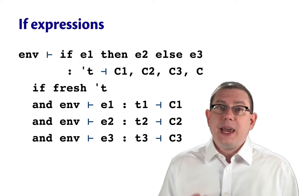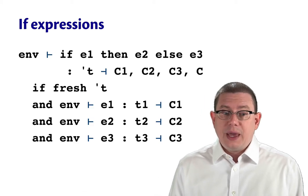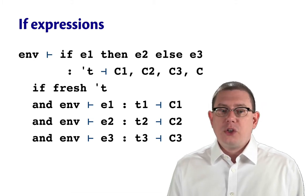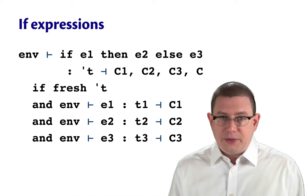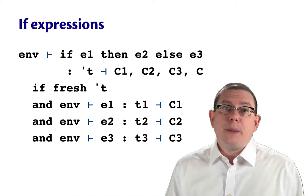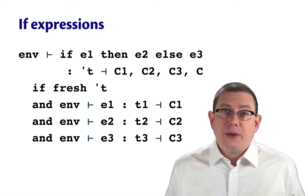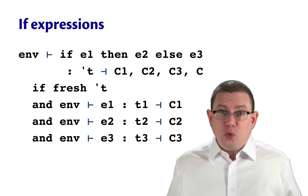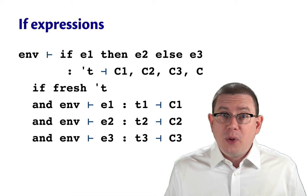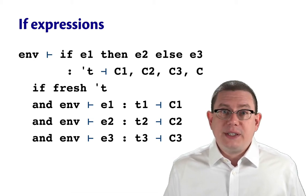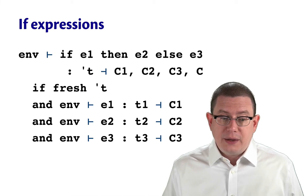Next, we're going to take that static environment env and we're going to do type inference for each of the three sub-expressions. So we'll infer the type of e1. That will be some type t1. Now, we have no control over what that type is going to be. The type inference algorithm might return bool. It might return a type variable. It might return something even crazier than that. All we know is that it's some type. So let's just let that be t1.